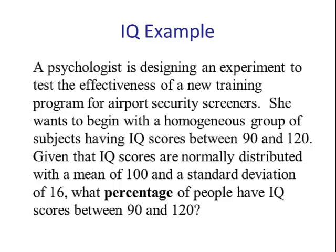A psychologist is designing an experiment to test the effectiveness of a new training program for airport security screeners. She wants to begin with a homogeneous group of subjects having an IQ score between 90 and 120. Given that IQ scores are normally distributed with a mean of 100 and a standard deviation of 16, what percentage of people have an IQ score between 90 and 120?